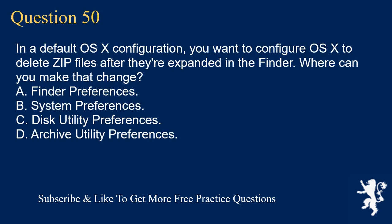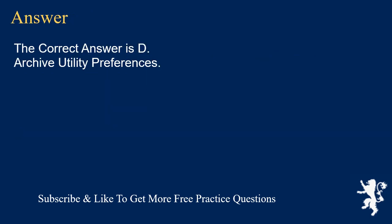Question 50. In a default OSX configuration, you want to configure OSX to delete zip files after they're expanded in the Finder. Where can you make that change? The correct answer is D: Archive Utility Preferences.